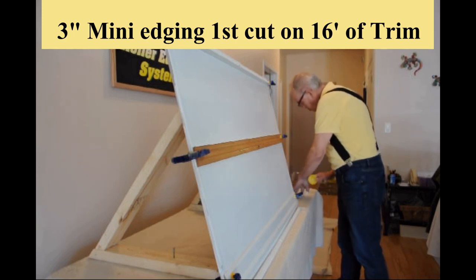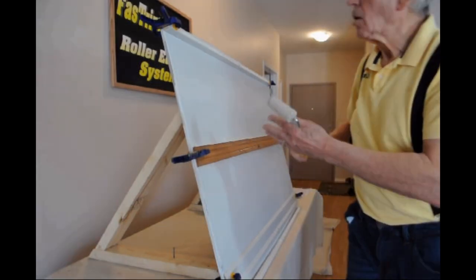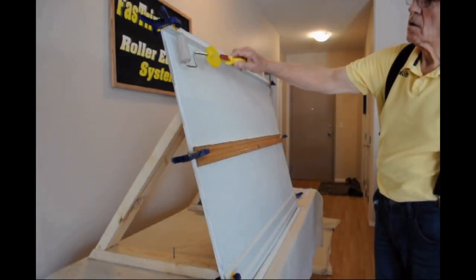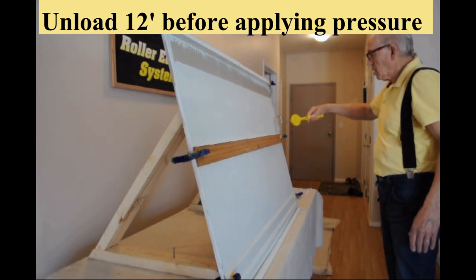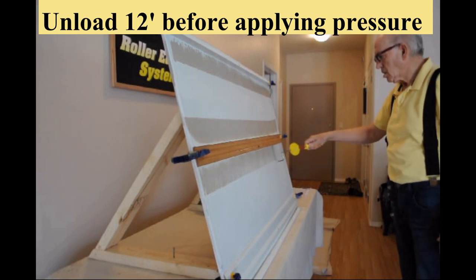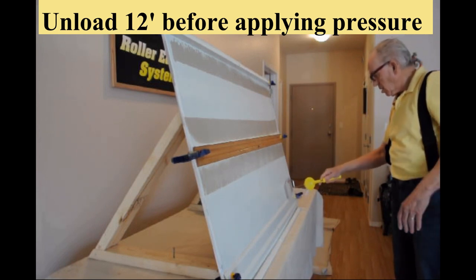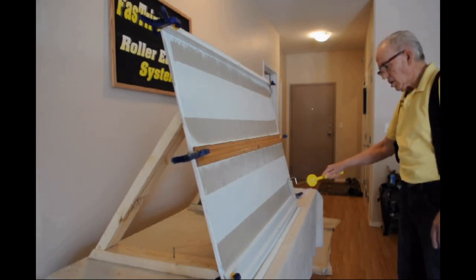The first edging roller we will look at is the 3 inch fast trim mini rollers. These rollers fit on all standard wire handles designed for mini rollers. The microfiber fabric carries a full load of paint. It is important to unload the majority of the paint before any pressure is applied.